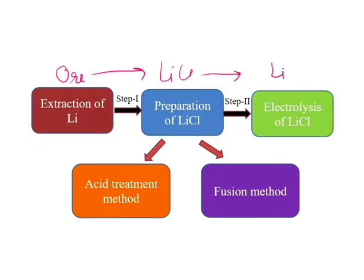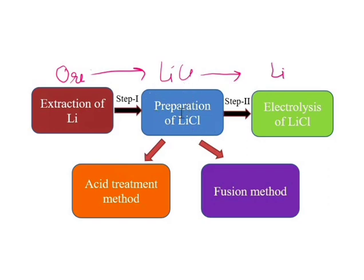Spodumene is an important ore used to extract lithium. The general extraction procedure involves two steps: Step one is the conversion of the ore to LiCl, and Step two is the electrolysis of LiCl. These two steps — preparation of LiCl from the ore and electrolysis of LiCl — are sufficient for extraction of lithium metal.